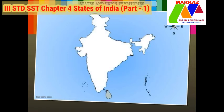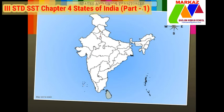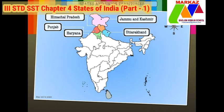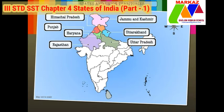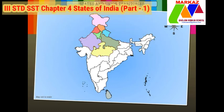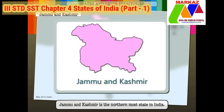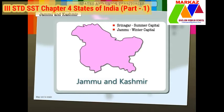India is made up of 29 states and seven union territories. The states of Jammu and Kashmir, Himachal Pradesh, Punjab, Haryana, Uttarakhand, Uttar Pradesh, Rajasthan and Madhya Pradesh are located in the northern and central regions of the country. Jammu and Kashmir is the northernmost state in India. It has two capitals — Srinagar, the summer capital, and Jammu, the winter capital.